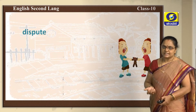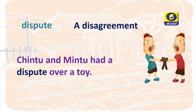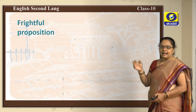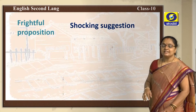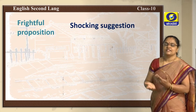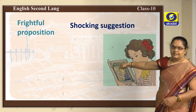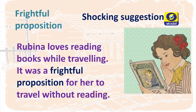'Dispute' means argument or disagreement. For example: Trintu and Mintu had a dispute over a toy. Next is 'frightful proposition' — a frightful proposition means a shocking suggestion; something that we don't want to do, but someone asks us to do it. For example: Rubina loves reading books while traveling, so if someone tells her not to read while traveling, it will become a frightful proposition for her. 'Tremble' means to shake involuntarily. For example: John trembled with fear when he saw a rat in his room.